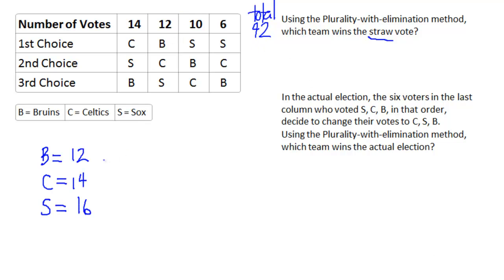Alright, you can see that the Bruins had a total of 12 first place votes, the Celtics 14, and the Sox, that's these two last columns, had a total of 16.